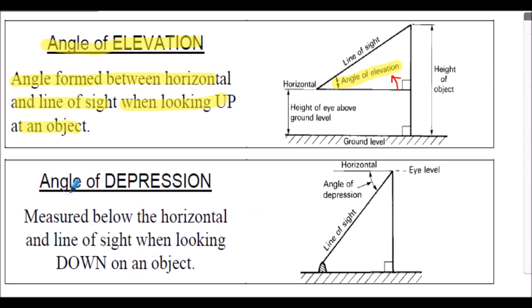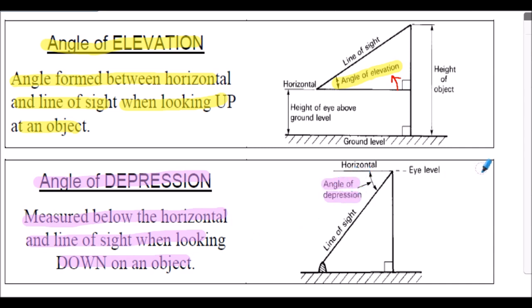Some of the questions also refer to the angle of depression. That's the angle measured below the horizontal and the line of sight when looking down on an object. Here is shown the angle of depression — the angle is measured downwards from the horizontal.